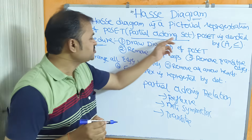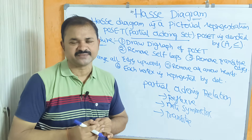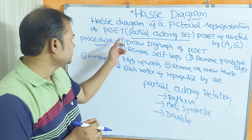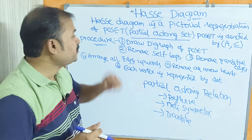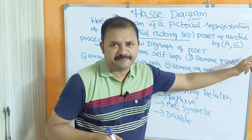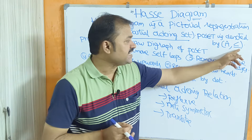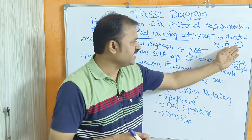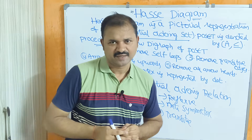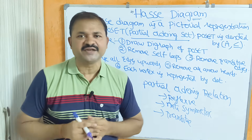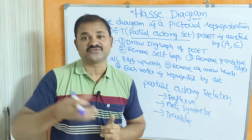If the relation is a partial ordering relation, then we can call that set a partial ordering set. In short we call it a poset. Poset is denoted by a pair — the first argument is the set name, the second argument is the relation. It may be less than, less than or equal to, greater than, greater than or equal to, or a division relation.